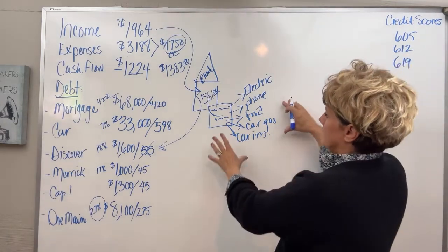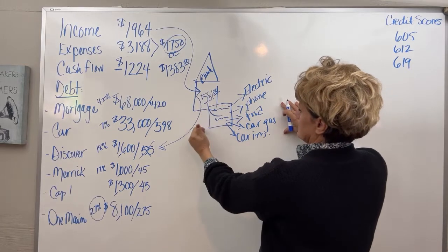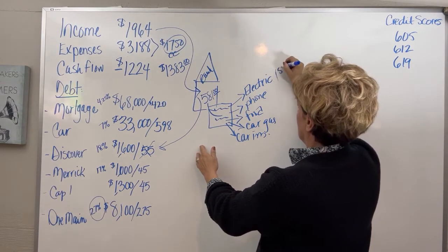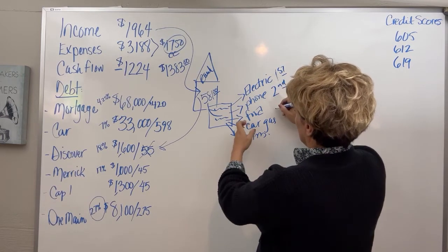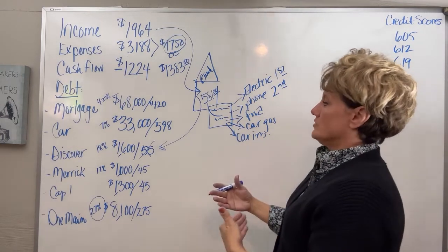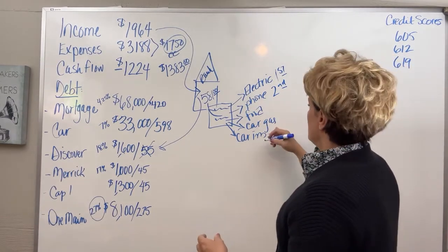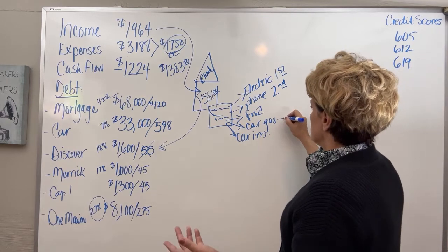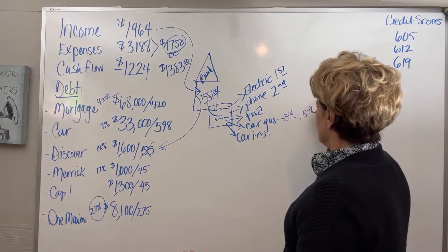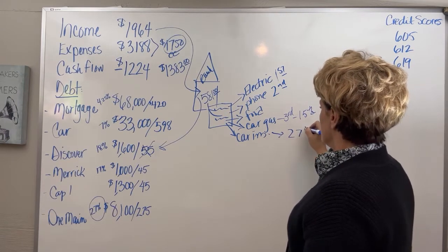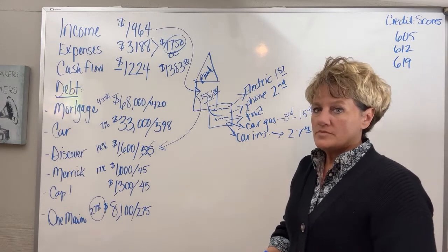So when he's using one card, that means that this is coming off through the month. So the electric might be on the first, the phone's on the second, the food comes out whenever he goes and gets groceries or restaurant food. So that's any time. The car gas, that might be once a week. So that might be on the third and the 15th, something like that. And then your car insurance might be on the 27th. So everything is coming out at different times in the month.